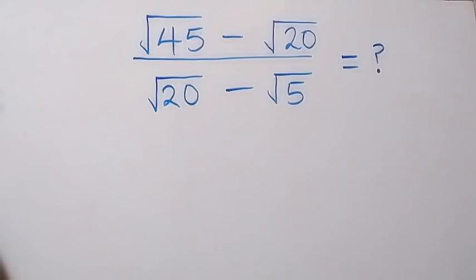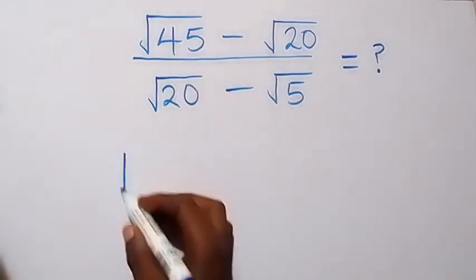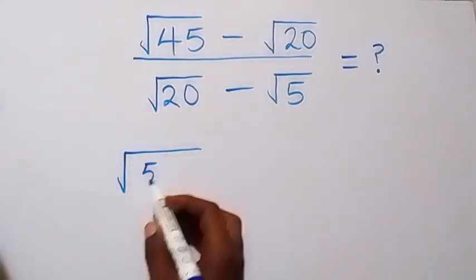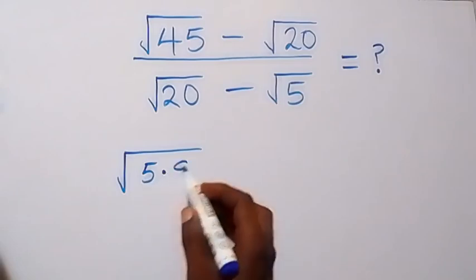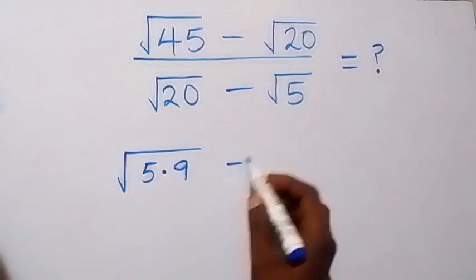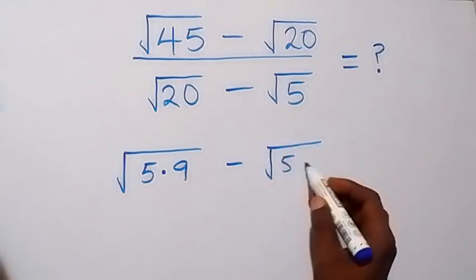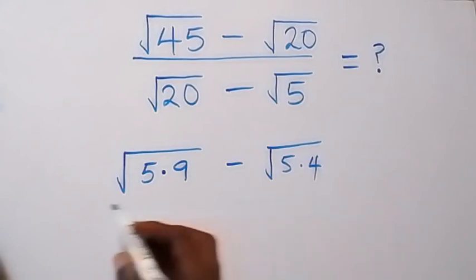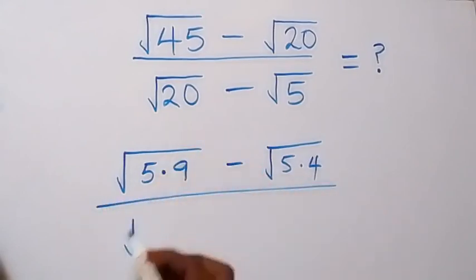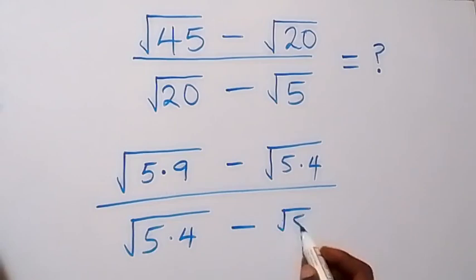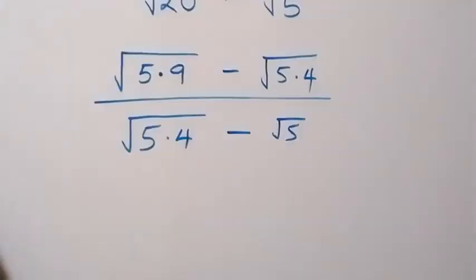From here we can write this — root 45 can be expressed as 5 times 9, then minus here 20 can be expressed as 5 times 4, then divided by square root of 5 times 4, then minus square root of 5.